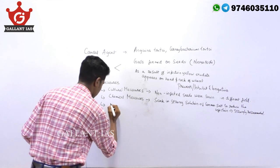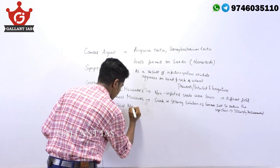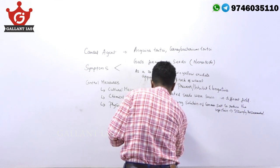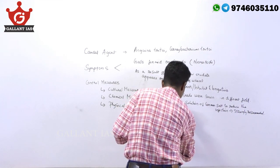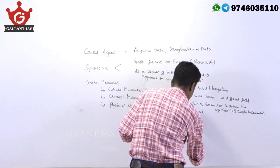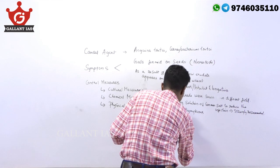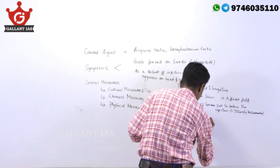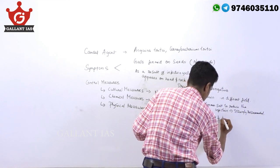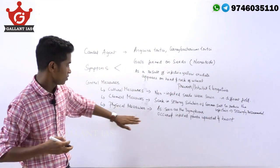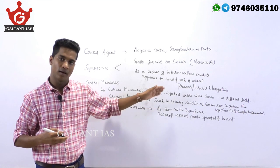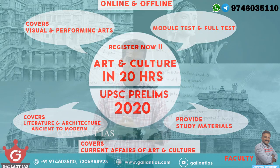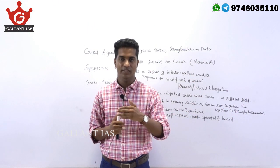The physical measure is: as soon as the symptoms occur, the infected plants are uprooted and burned. This is a physical measure to reduce the spread of Tundu disease. This is the way to address such questions. If you address all questions in this manner, you can definitely score well in the mains exam.